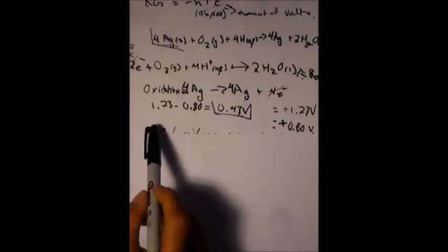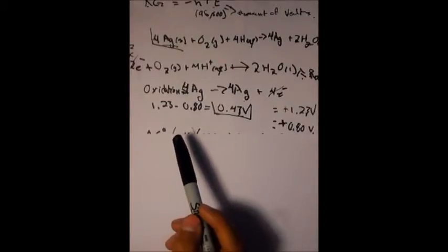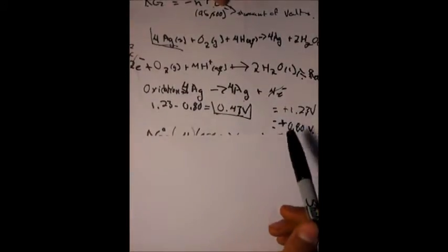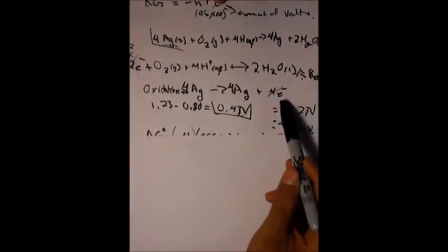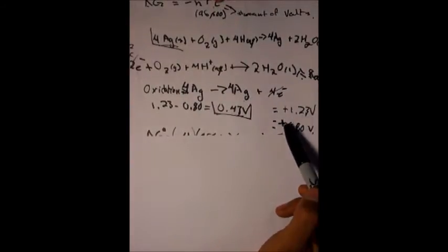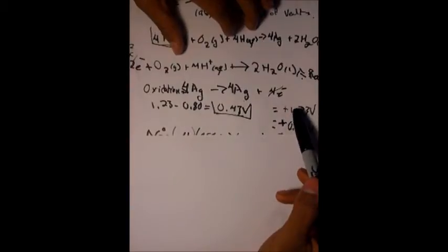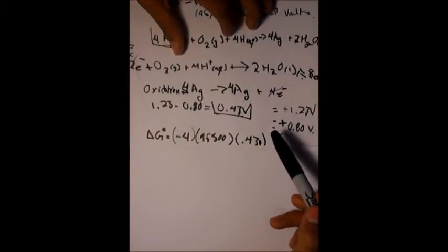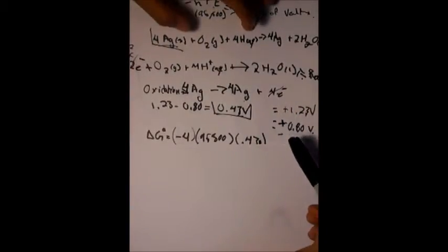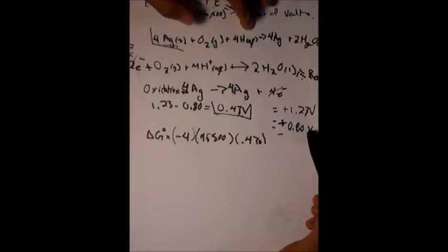To find the total volts to be able to use this formula, we'll have to add or subtract both of these volts. The first one is going to be given: it's 1.23 volts, and the other one from your list will be 0.80 volts.